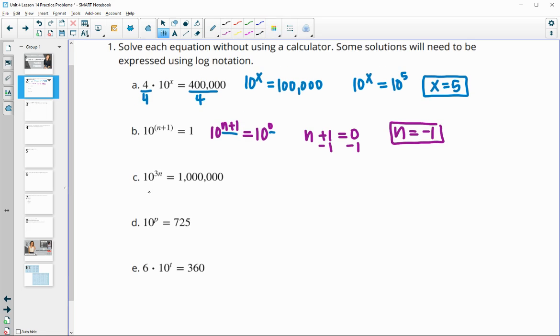Part c, same idea. 10 to the 3n and 1,000,000 is 10 to the 6th power. We get both with the same base so these exponents must be equal. 3n equals 6, so divide by 3 and we get n equals 2.